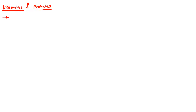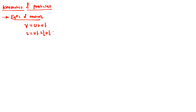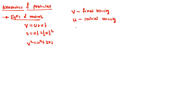In kinematics of particle, we will deal only with the motion analysis. For the motion analysis, we will require the equations of motion. The first equation is v = u + at, then s = ut + ½at², and v² = u² + 2as. Here v is the final velocity, u is the initial velocity, a is the acceleration, t is the time for that motion, and s is the displacement.